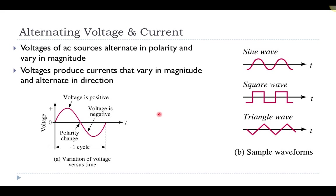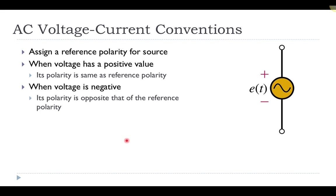If you have a sinusoidally varying voltage, you also have a sinusoidally varying current, and vice versa — so AC refers to both alternating voltage and current. Here's a picture of one cycle of a voltage supply oscillating like a sine wave: it starts at zero volts, increases sinusoidally, decreases back to zero, goes negative, then returns to zero, after which it repeats.